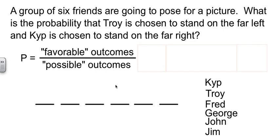Let's apply this idea. We've got a group of friends, six friends, who are going to pose for a picture. I want to know the probability that Troy is on the left and Kip is on the right. Remember, what probability means is the number of favorable outcomes, the number of things that match what we're looking for, over the possibilities, the number of things that could happen.